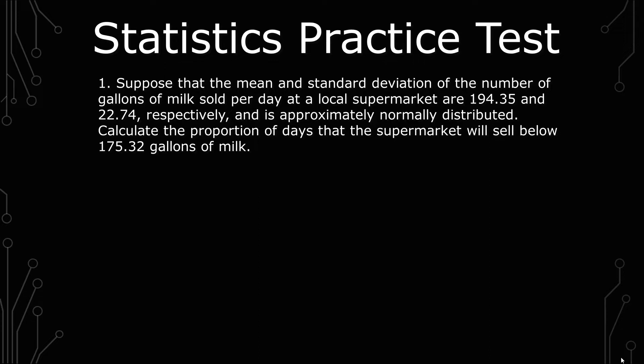So from the question we know what the population mean and population standard deviation are and that we're using a normally distributed approximation in regards to the X that we were given. So the X that we were given was 175.32.